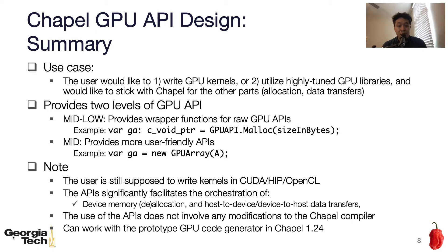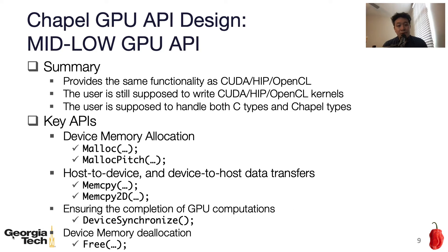Another important thing is that it can work with the prototype GPU code generator in Chapel 1.24. Let me give you more details of the mid-low-level API design. It provides wrapper functions for low-level GPU APIs to give the user the same functionality as CUDA, HIP, and OpenCL. For example, there is malloc for device memory allocation, memcopy for host-to-device and device-to-host data transfers, device synchronize to ensure completion of GPU computation, and free for device memory deallocation. One important thing to note is that at this level, the user needs to handle C or C++ types in addition to Chapel types, because this level exposes C or C++ types such as C void pointers to the user.